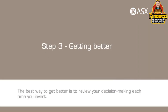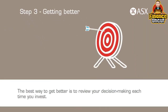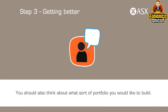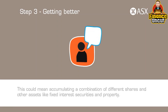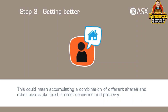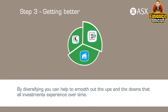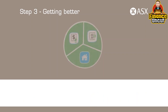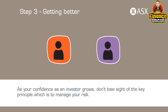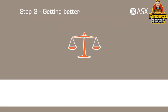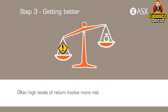Step 3: Getting better. The best way to get better is to review your decision making each time you invest. You should also think about what sort of portfolio you would like to build. This could mean accumulating a combination of different shares and other assets like fixed interest securities and property. By diversifying, you can help to smooth out the ups and downs that all investments experience over time. As your confidence as an investor grows, don't lose sight of the key principle: manage your risk. Often higher levels of return involve more risk.